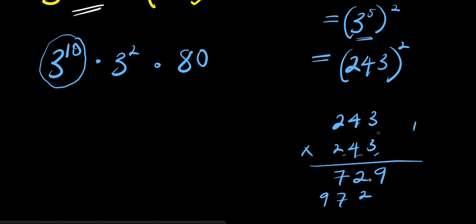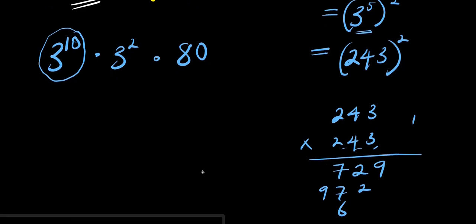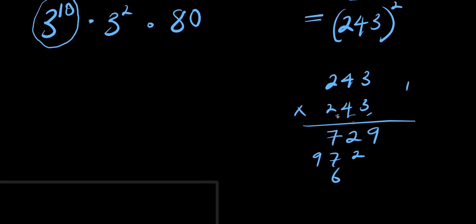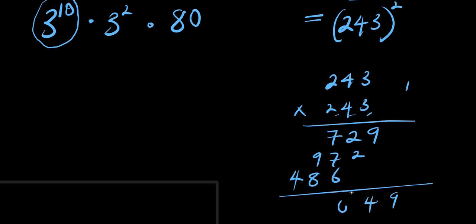Then we move over to two: two times three is six; two times four is eight; two times two is four. Adding everything up: nine, then four, then twenty — zero carry two. That becomes nineteen; nine carry one. This gives us fifty-nine thousand and forty-nine.